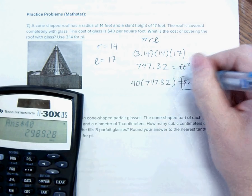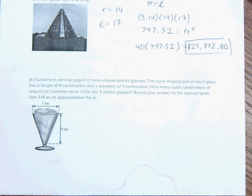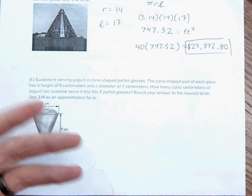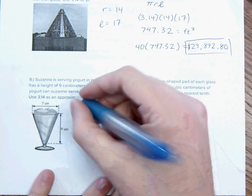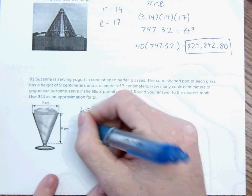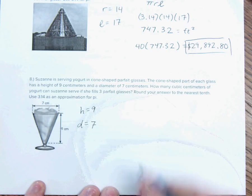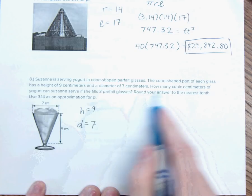Alright. Susanne is serving yogurt in a cone-shaped parfait glass. Everybody loves parfait. Parfait is layers. The cone-shaped part of each glass has a height of 9 centimeters and a diameter of 7 centimeters. How many cubic centimeters of yogurt is Susanne serving if she's serving three parfait glasses? You know the way I think about this. If I have to serve three people this parfait, how much yogurt do I need? So, we have a height of 9 and we have a diameter of 7. And we're worried about cubic things. We're worried about volume.